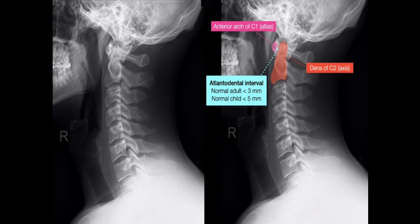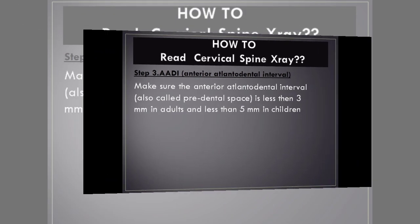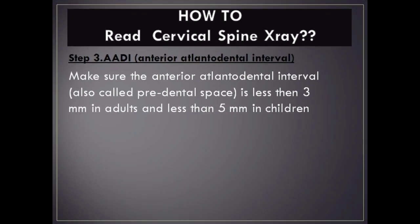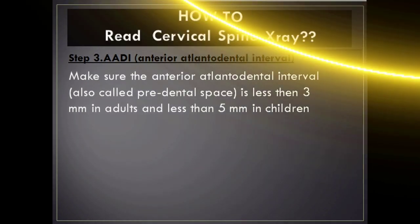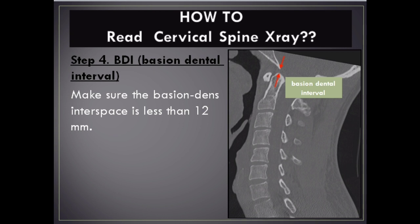Step 3 – AADI (Anterior Atlantodental Interval): Make sure the anterior atlantodental interval, also called the pre-dental space, is less than 3 mm in adults and less than 5 mm in children.